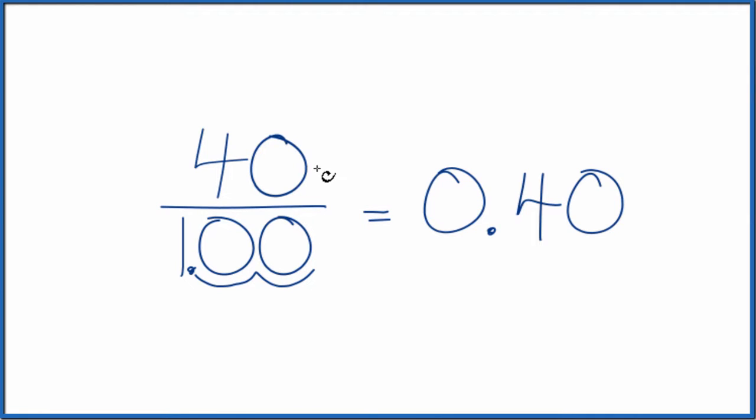But we have to do it to the numerator as well. So 1, 2. And now we have, let's call it 0.40 over 1. That's just 0.40.